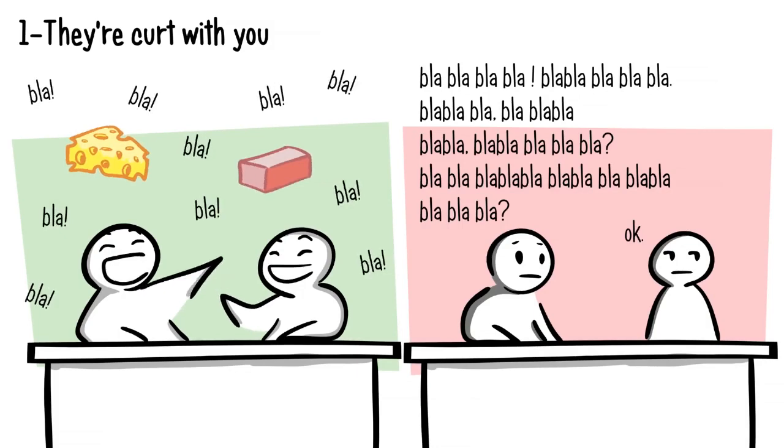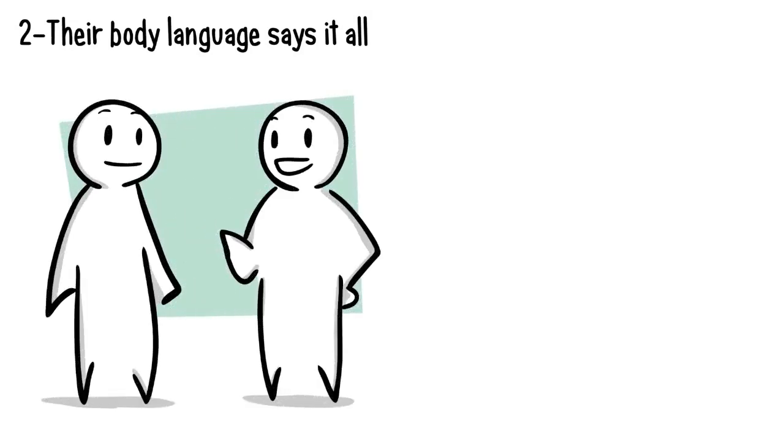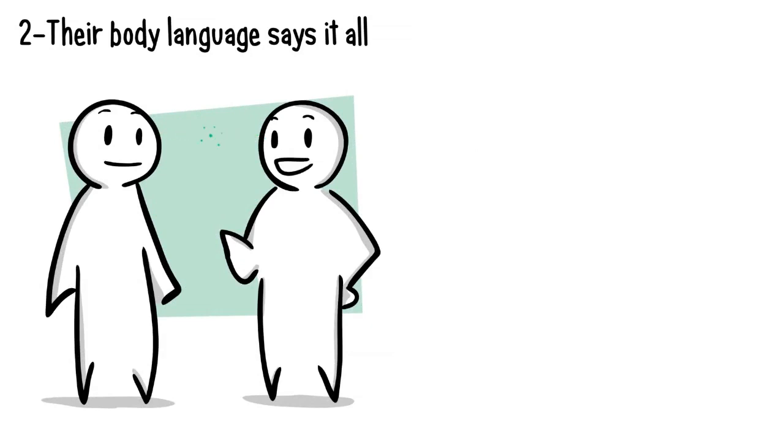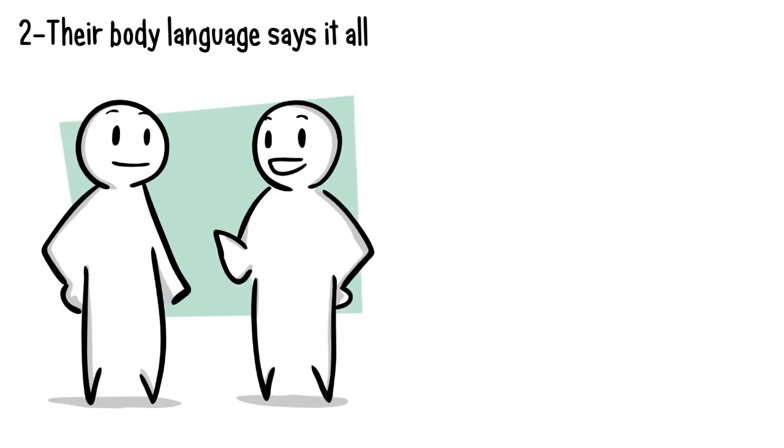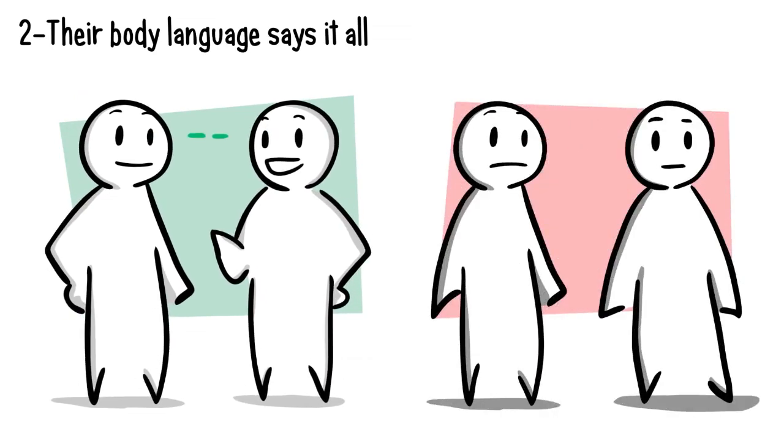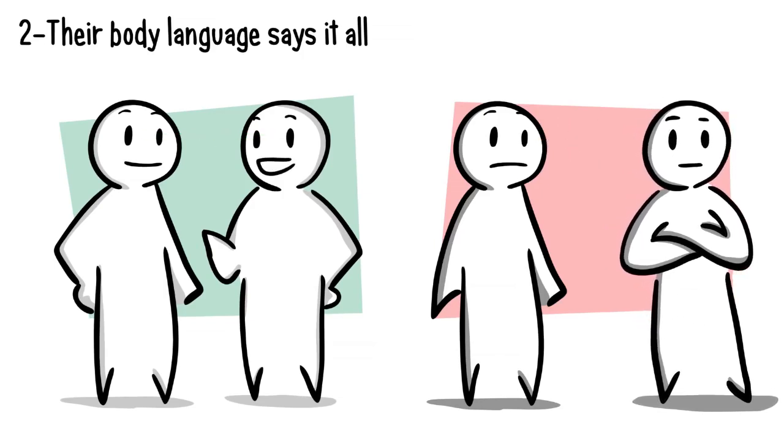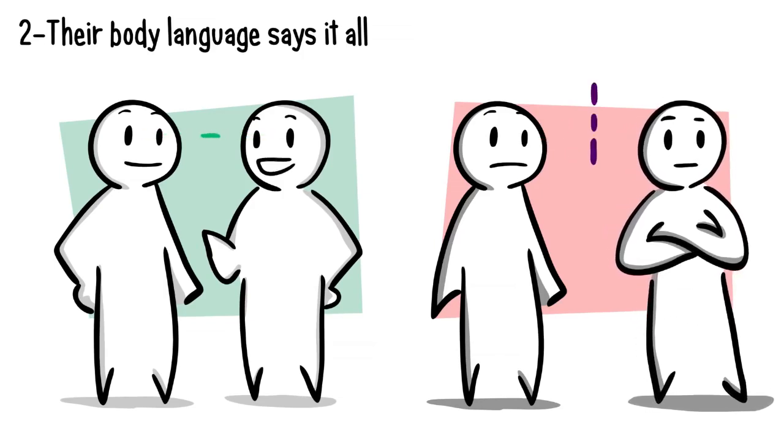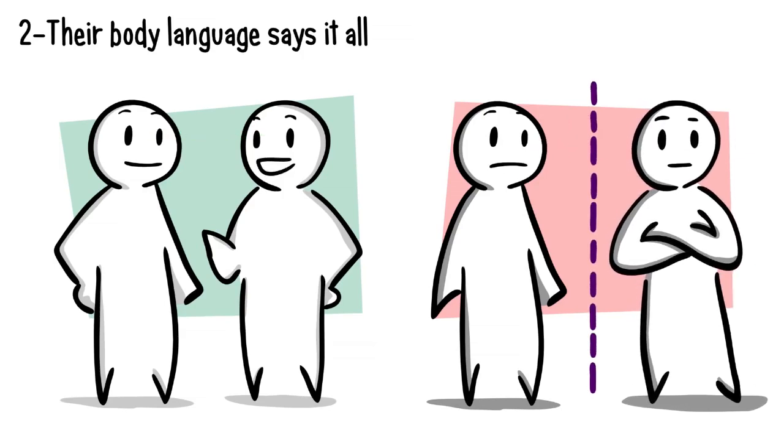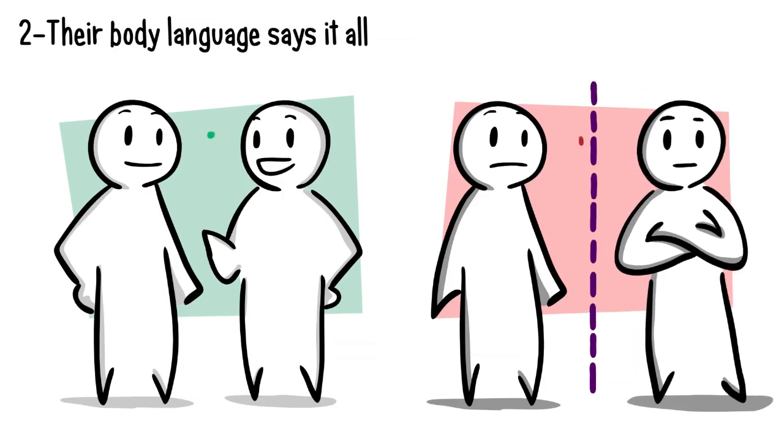Number two: their body language says it all. When we like someone, we have a tendency to make eye contact, mirror their body language, and lean in closer. But when someone dislikes you, they will avoid eye contact, cross their arms, and lean away from you. They do this in order to protect themselves from you, creating an invisible barrier that keeps you out. Harsh, right? But it's a common defense mechanism humans use.